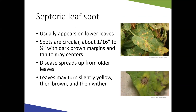Septoria leaf spot is another common tomato disease, usually appearing on lower leaves and working upward. It overwinters in infected plant debris or weeds, so crop rotation and good sanitation help reduce risk. Spots are circular, one-sixteenth to one-quarter inch, with brown margins and tan to gray centers. If you look closely, you can see small black pimple-like fruiting bodies in the spots — these produce the spores that spread the disease. Affected leaves eventually turn slightly yellow, then brown, and fall off.